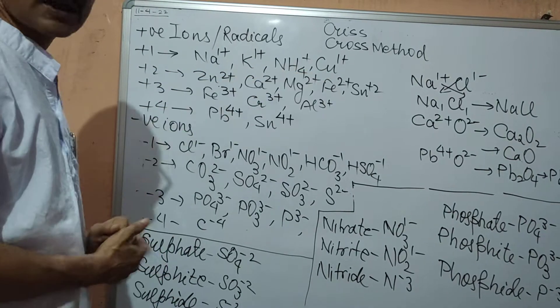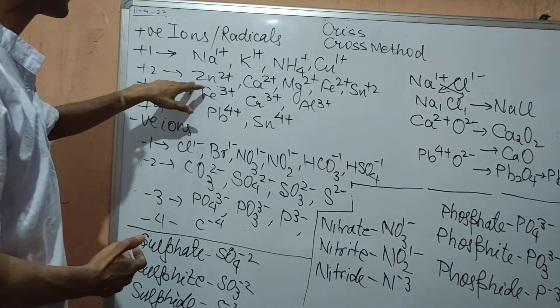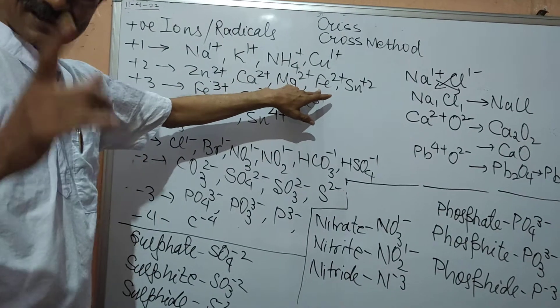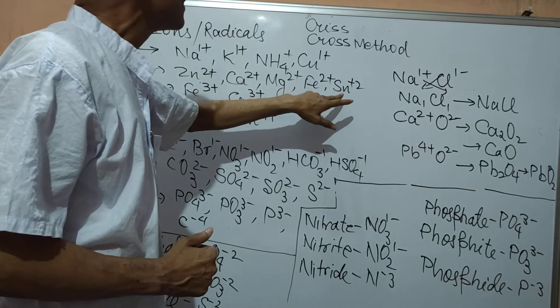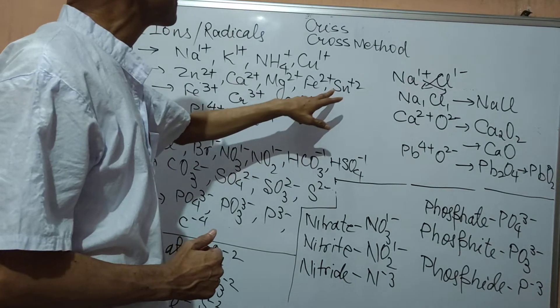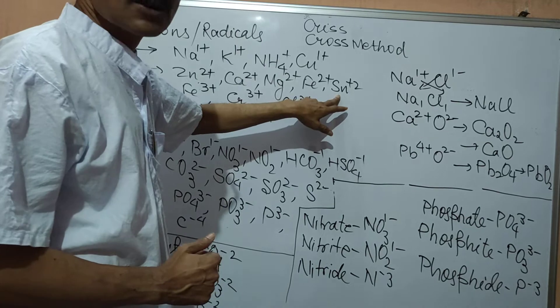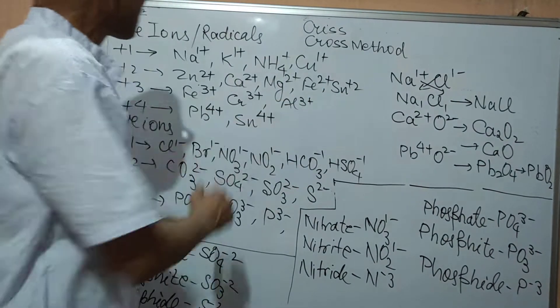Plus 2: zinc, calcium, magnesium, iron. Iron has got the variable valency. Fe2+ and Fe3+. Similarly the tin, Sn has also got a variable valency. Plus 2 and plus 4.